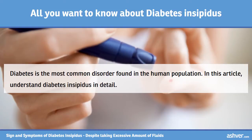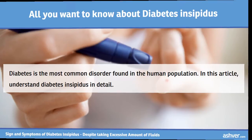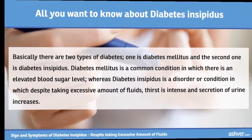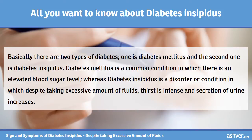Diabetes is the most common disorder found in the human population. In this article, we understand diabetes insipidus in detail. Basically there are two types of diabetes: one is diabetes mellitus and the second one is diabetes insipidus.